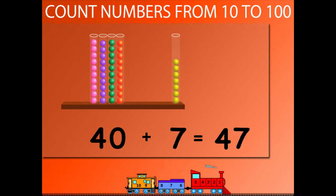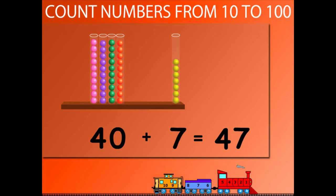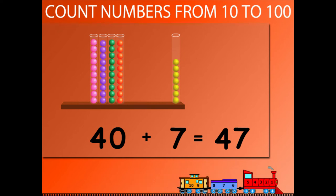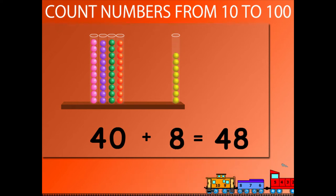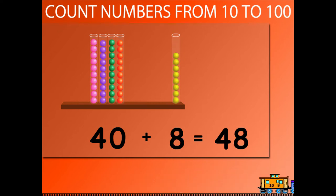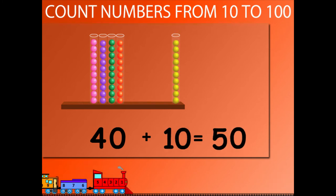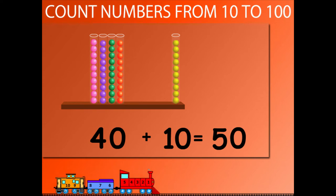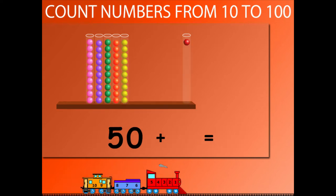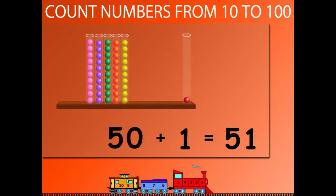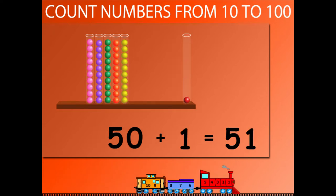40 plus 7 is equal to 47. 40 plus 8 is equal to 48. 40 plus 9 is equal to 49. 40 plus 10 is equal to 50. 50 plus 1 is equal to 51.